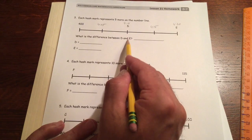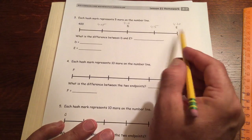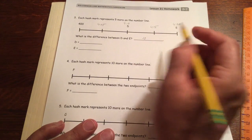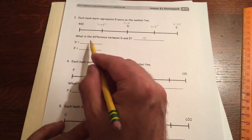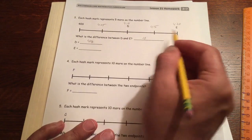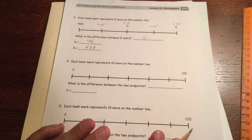So the difference between D and E, difference means we're going to subtract. We could count it by fives. It's 5, 10. It's 10. And we don't have any units here. So we just write 10. D is 410. And E is 420. These are just numbers on a number line.